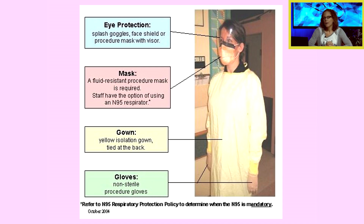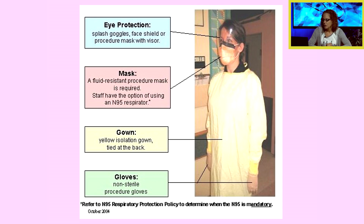So we might have a patient that's on airborne precautions and we would be required to wear eye protection — splash goggles, a face shield, a procedure mask with a visor, a surgical mask, or even an N95 mask. Also a yellow isolation gown tied in the back, and gloves — these would be clean gloves, not sterile gloves, for any type of interaction with that patient.